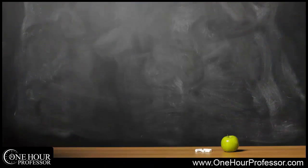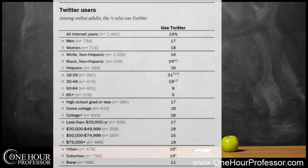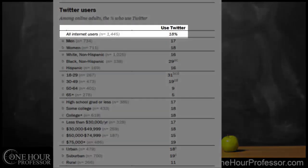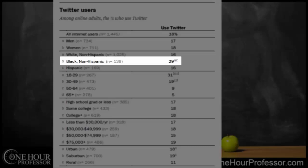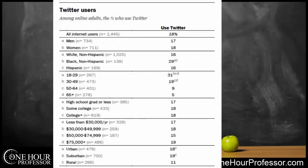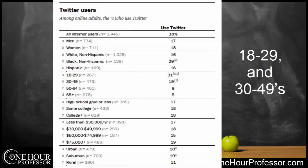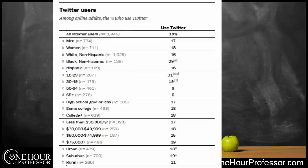Moving on to Twitter users: among online adults, 18% of those surveyed use Twitter. Breaking that down further, interestingly, 29% of those users are Black non-Hispanic, meaning African American younger adults are using this platform significantly. As you can see in the age ranges, this social network is really overrepresented in the ages of 18 to 29. Basically, those 49 and under is really where most Twitter usage resides.